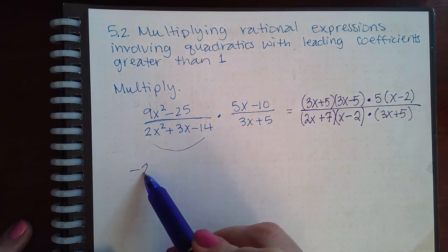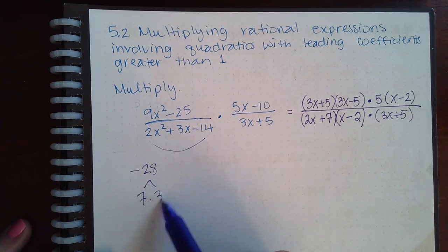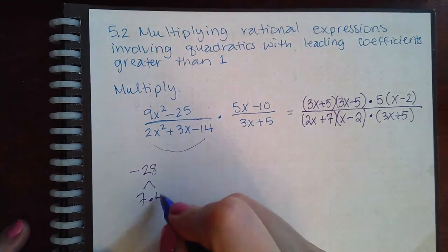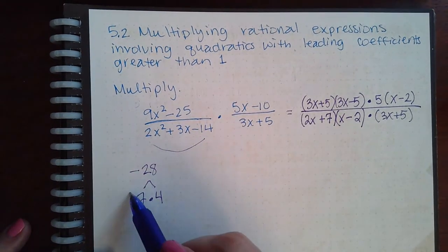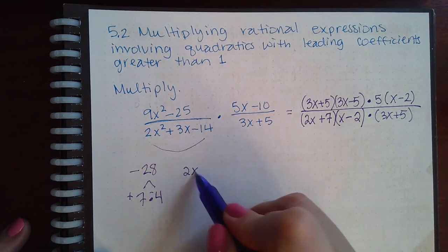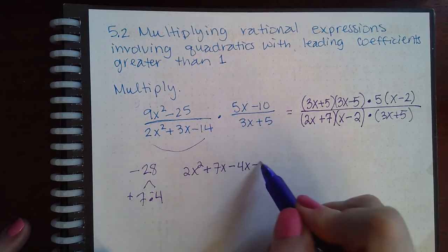So 2 times 14 is negative 28, and then I think 7 and 4 are my magic numbers to get that 3. The bigger one would have to be positive, making the smaller one negative. And so then that becomes plus 7x minus 4x minus 14.